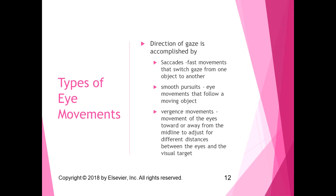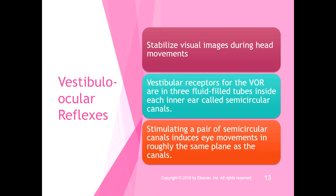Vergence movements are movements of the eyes toward or away from the midline to adjust to different distances between the eyes and the visual target. The closer an object gets to you, the more your eyes converge toward the midline; the farther away, the more they diverge. In a convergence test, you have someone focus on an object and bring it closer until it either becomes blurry or appears as two objects — that is your convergence distance.